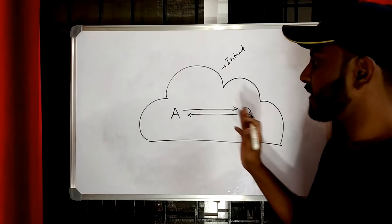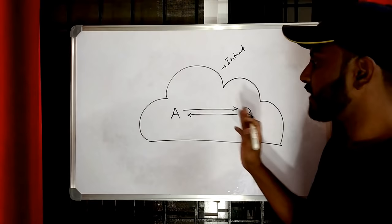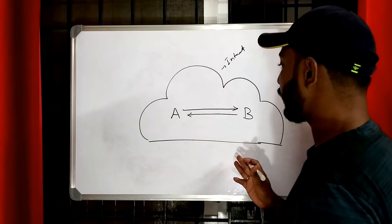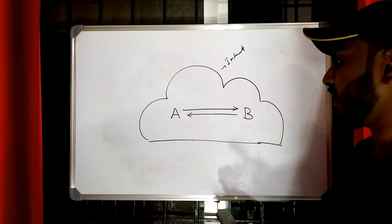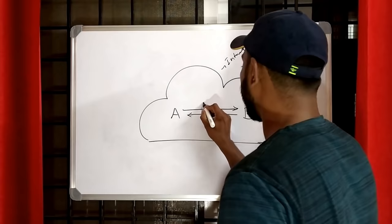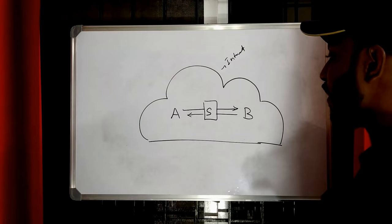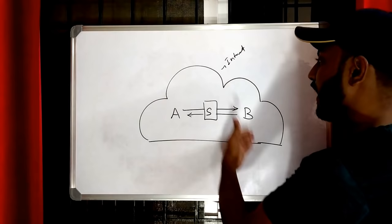If it is the internet, consider there are billions of users using this chatting application. In this scenario, it is very difficult to know the address of each and every client on the internet — that is not a feasible scenario. To make the system robust and highly available, what we need to do is bring something called a server in between. The job of this server is to coordinate messages between all the clients connected to it.